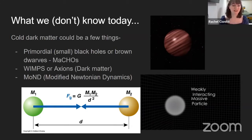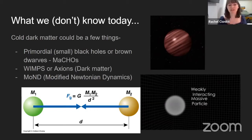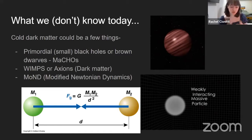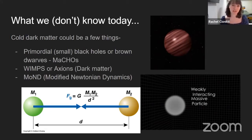WIMPs — weakly interacting massive particles — and axions are a similar type of particle. These are the literal dark matter you think of when you hear the term. People think dark matter may be particles that just don't interact with light, made of something different that we don't yet understand — something that isn't protons, neutrons and electrons.